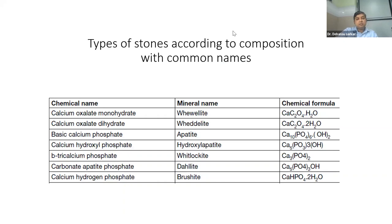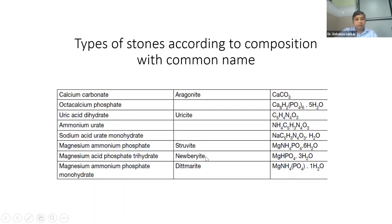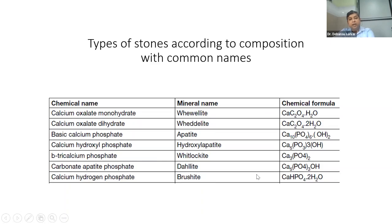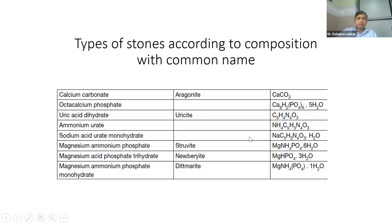Next is the chemical composition and common names. These are all calcium stones: calcium monohydrate, dihydrate, calcium phosphate, calcium hydroxyphosphate. These are infection stones: calcium apatite, calcium hydrogen phosphate. You need to remember these things for exam purposes — calcium carbonate and Struvite are mainly asked in exams. Struvite composition is particularly important to remember.